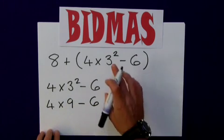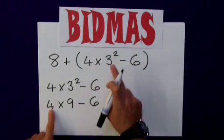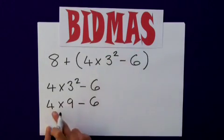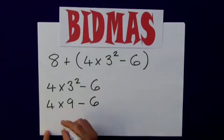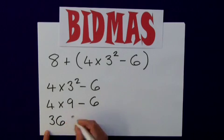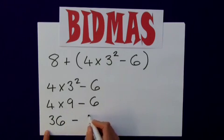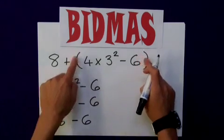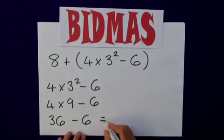Continuing using BIDMAS, what comes next? There's no division, but there is a multiplication. 4 times 9 is 36 minus the 6. Gives me an answer for this bracketed part only of 30.